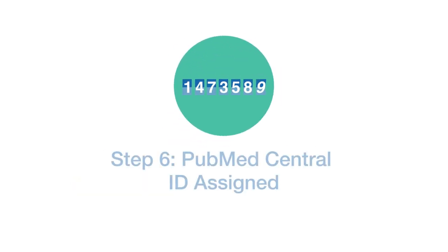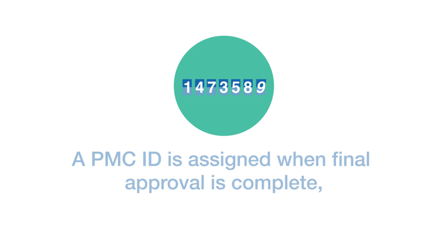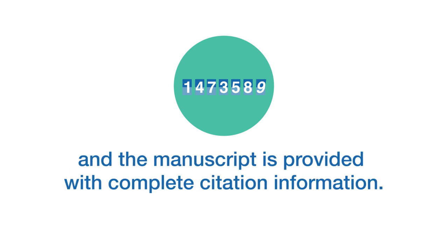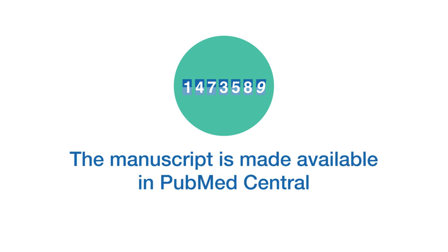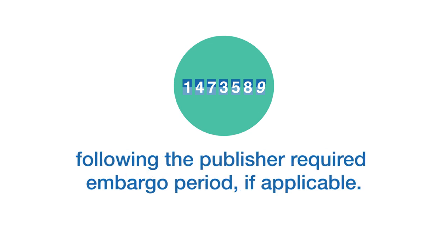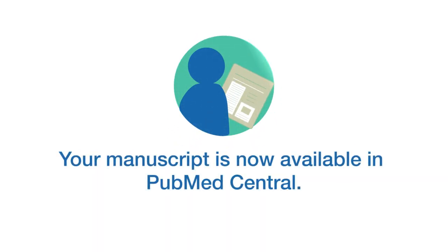Step six: PubMed Central ID assigned. A PMC ID is assigned when final approval is complete and the manuscript is matched to a PubMed record with complete citation information. The manuscript is made available in PubMed Central following the publisher required embargo period, if applicable. Congratulations! You have now successfully deposited your submission to NASA's PubSpace Repository.